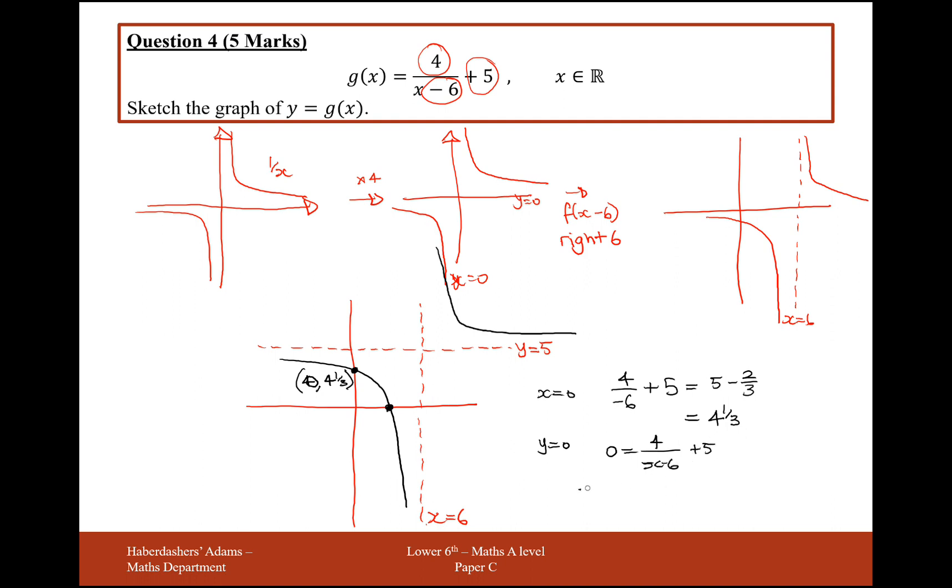So I'll take away the 5 onto the other side and times by x minus 6, that will give me a 4. Expand in the brackets, I'll get minus 5x plus 30 equals 4.